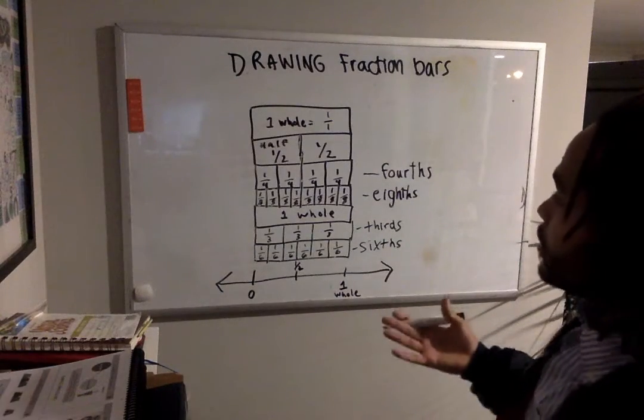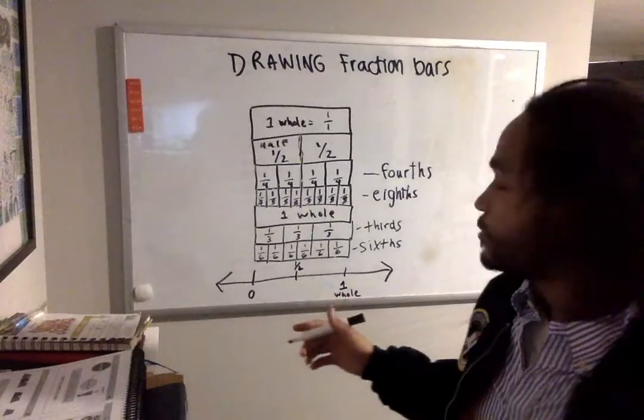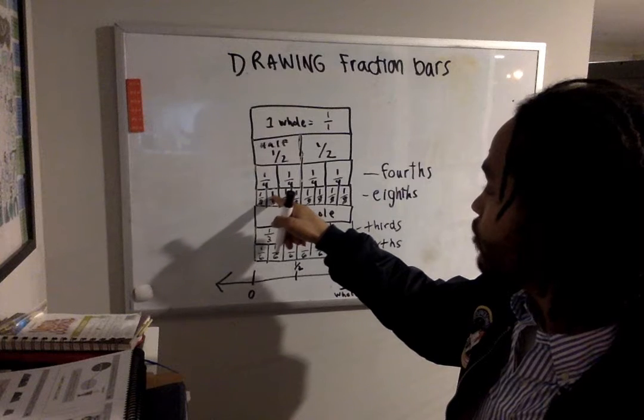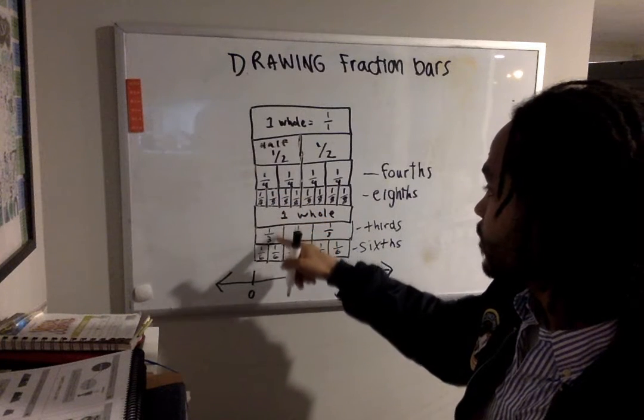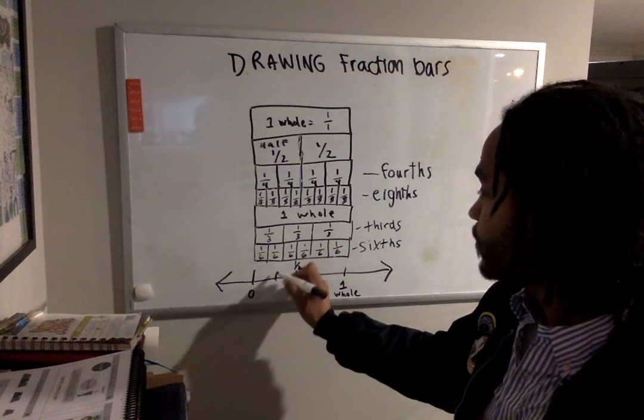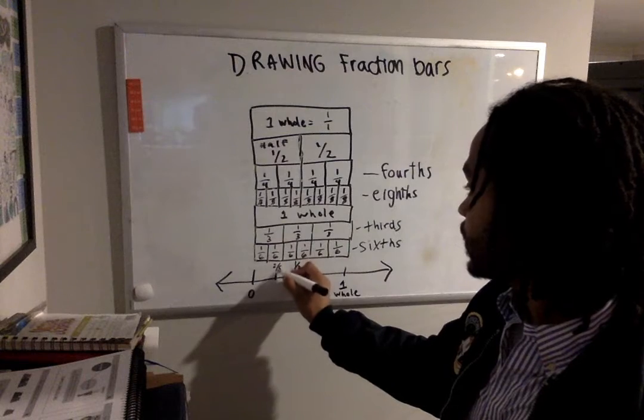Next, let's say I want to show where two eighths are. I'm gonna look and count. One eighth, two eighths. Taking this and I'm gonna go down straight. Boom. It's right about here. And trust me, it's not perfect, but it's very close. Two eighths.